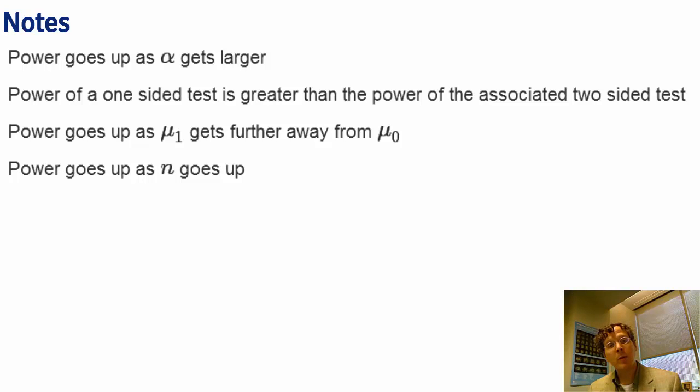As n goes up, the sample mean has less variability, and so we have higher power. As sigma goes down, our sample mean has less variability, and so we're going to have higher power.